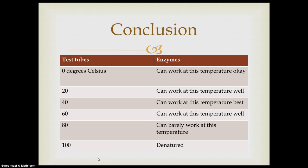Conclusion. From test tubes, 0 degrees Celsius, enzymes can work at this temperature okay. But for 20 degrees Celsius, the enzymes can work at this temperature well. 40 degrees Celsius, the enzyme catechol oxidase can work at this temperature best. And 60 degrees Celsius, they can work at this temperature well. 80 degrees Celsius, the catechol oxidase can barely work at this temperature, and 100 degrees Celsius, the enzymes have denatured.